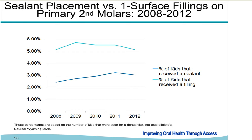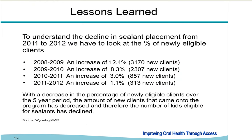We will continue to monitor this trend and assess whether we are truly reducing the number of fillings needed by paying for sealants on A, J, K, and T. The decline in sealant placement from 2011 to 2012 is attributed to lower enrollment of new Medicaid clients — from approximately 3,170 new eligible clients in 2008 to 2009, down to only 313 new clients in 2011 to 2012, meaning fewer teeth to be sealed.